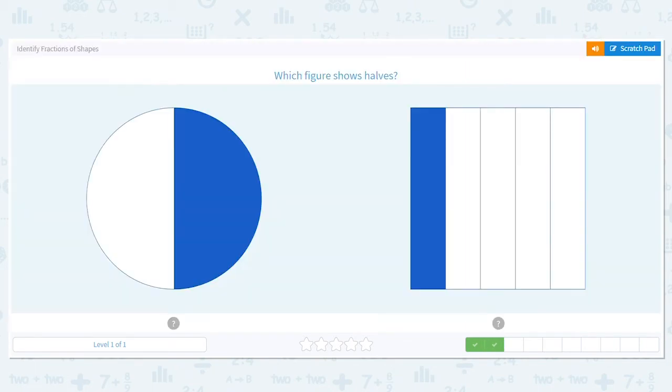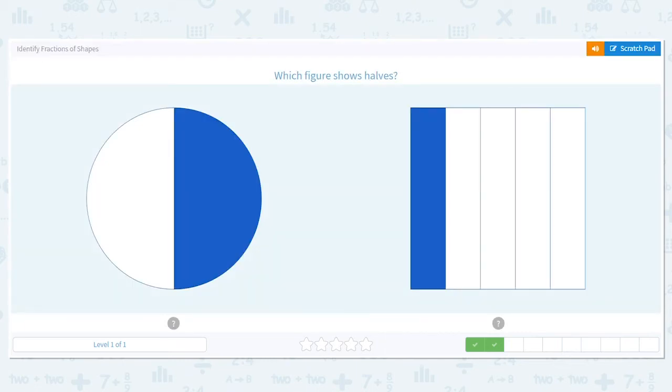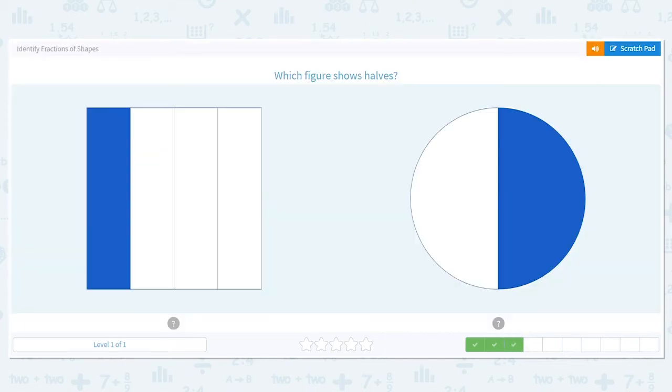Which figure shows halves here? Remember halves, two equal pieces. It is our circle again. Each piece is one half.